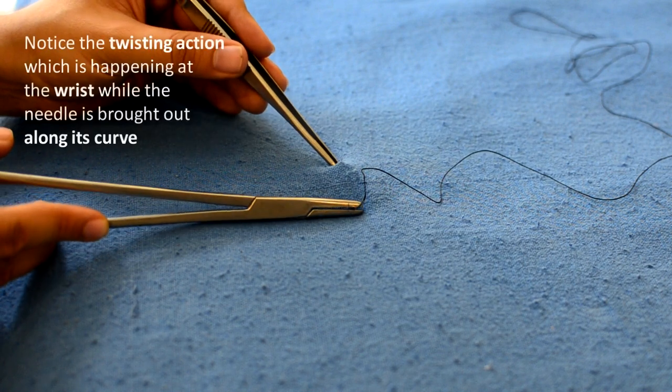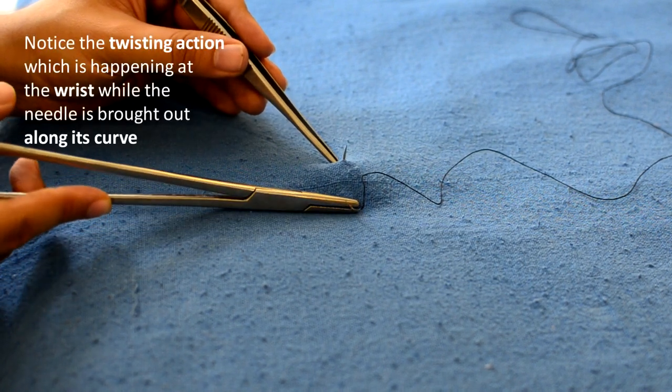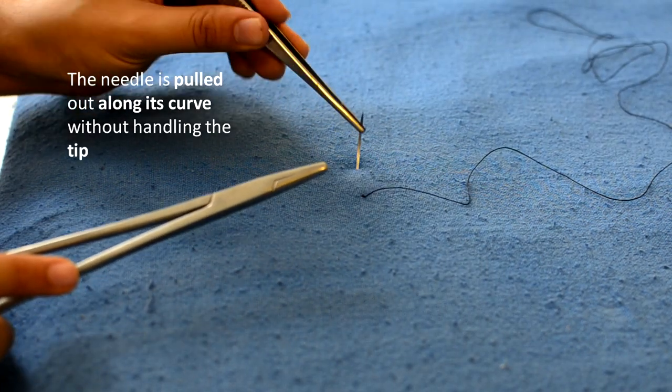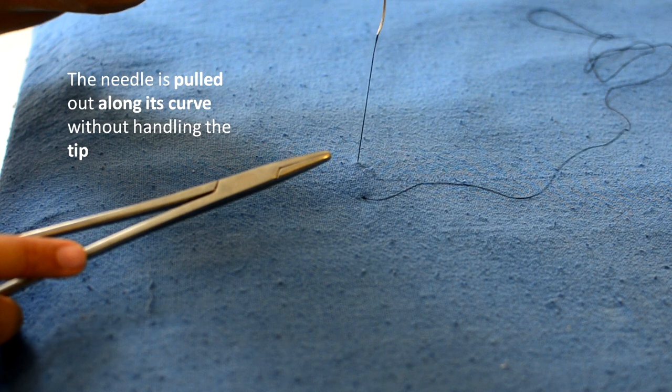Just notice how the wrist is twisting and following the curve of the needle. While pulling out the needle, again the curve of the needle is followed and the tip is not to be handled.